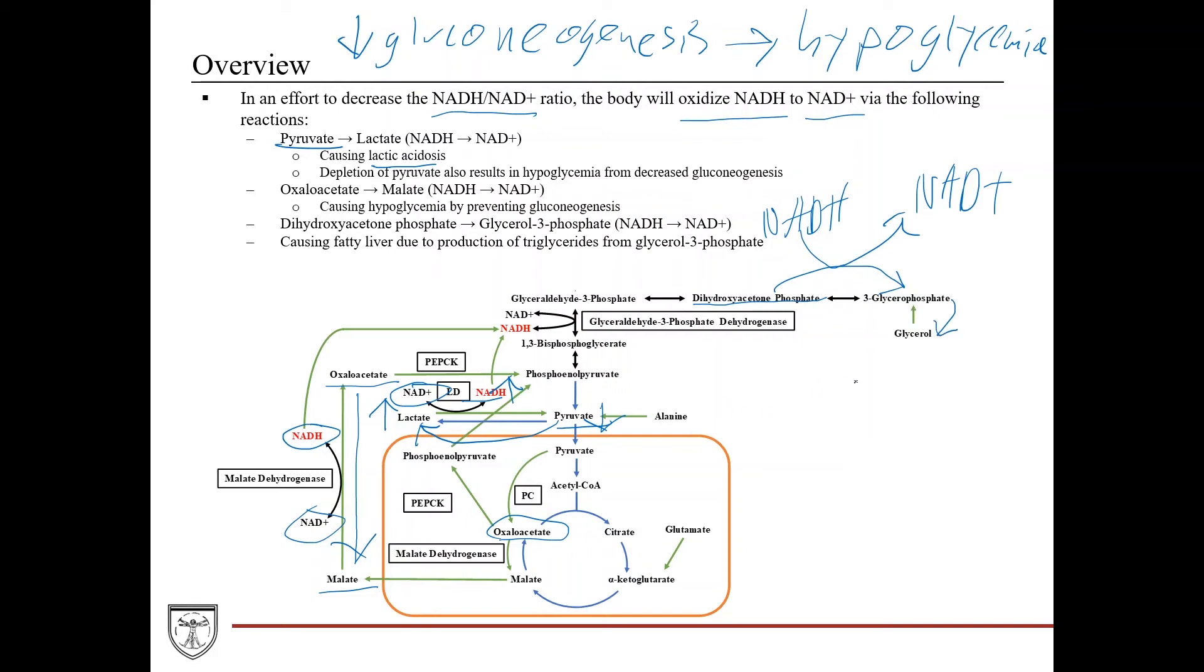And so then glycerol-3-phosphate can get converted into glycerol. Now, all of this can also contribute to a fatty liver. And the reason for that is, remember acetate is the final product of alcohol metabolism that can get converted into acetyl-CoA,